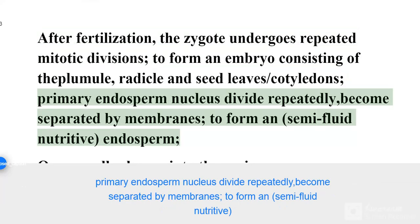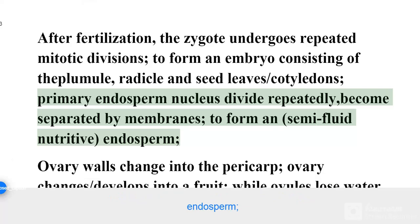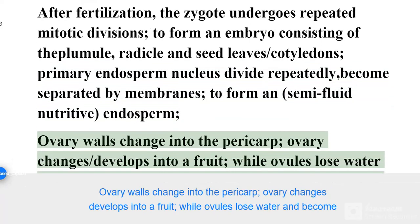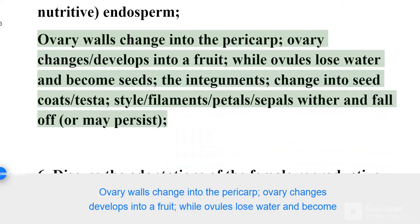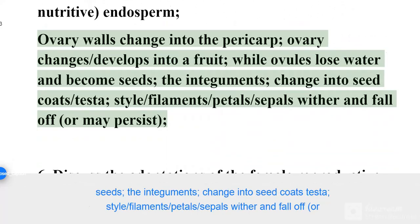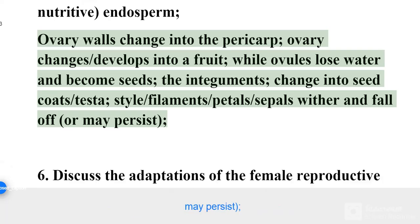The primary endosperm nucleus divides repeatedly and becomes separated by membranes to form a semi-fluid nutritive endosperm. The ovary walls change into the pericarp; the ovary develops into a fruit, while ovules lose water and become seeds. The integuments change into seed coats (testa). The style, filaments, petals, and sepals wither and fall off, or may persist.